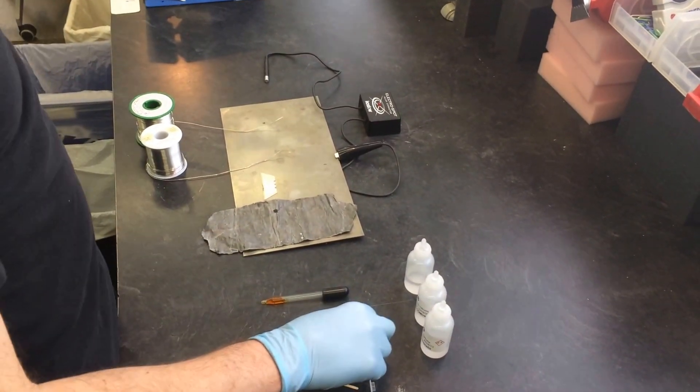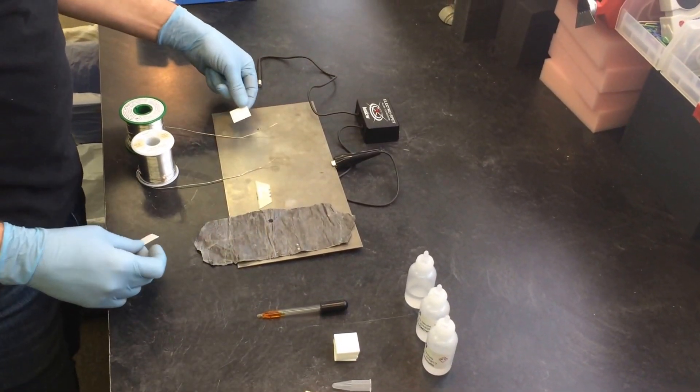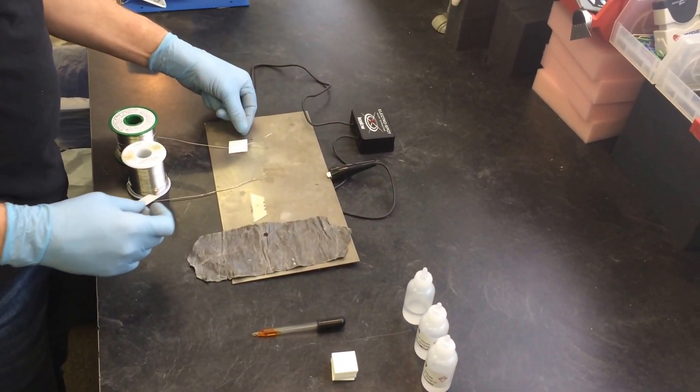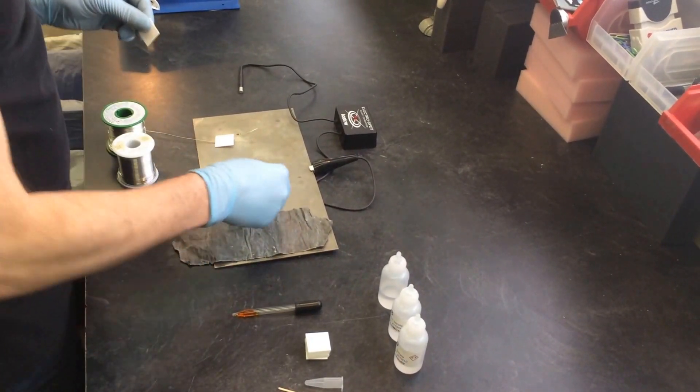So the instruction manual says grab a sheet of your O100 paper and put it on the metal that you wish to test. So I'm going to do four tests at once for the demonstration.